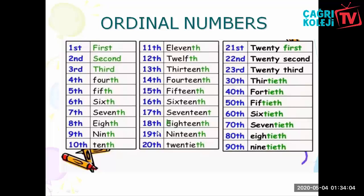But when it comes to 21, we go back to the same pattern: 21st, 22nd, 23rd. When it comes to 30 or 31: 31st, 32nd, 33rd. In the same way: 41st, 42nd, 43rd — like that.